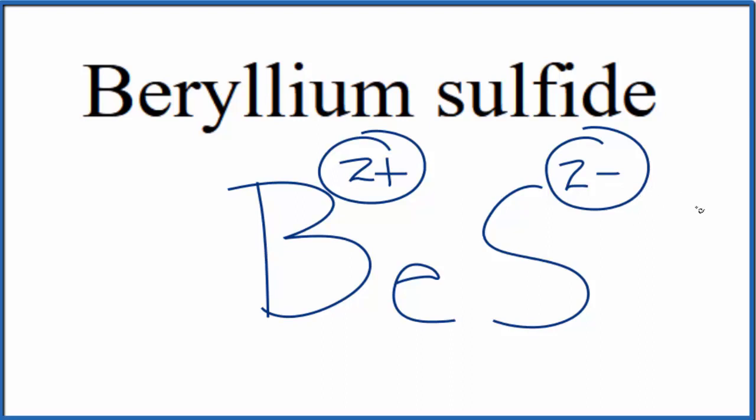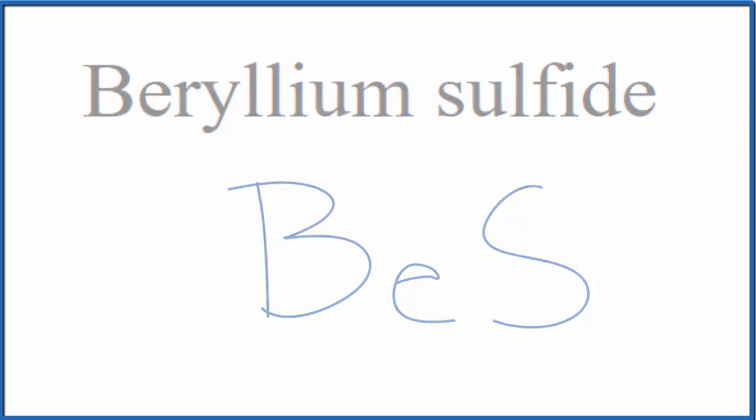2+ and 2-, that adds up to zero, so this is the formula for beryllium sulfide, BeS. This is Dr. B, thanks for watching.